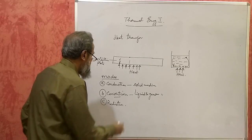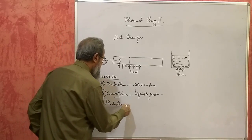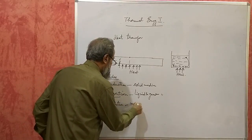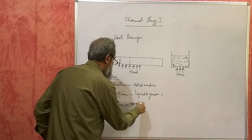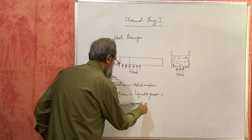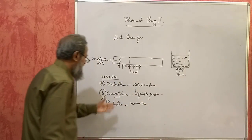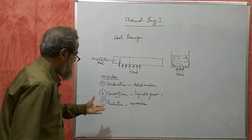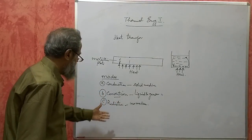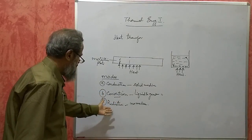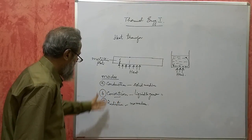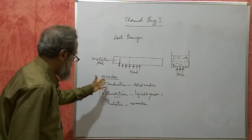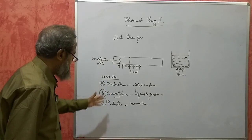Radiation requires no medium; it can take place without a medium. For example, the heat from the sun reaches the earth without a medium through radiation. So these are the three modes of heat transfer.